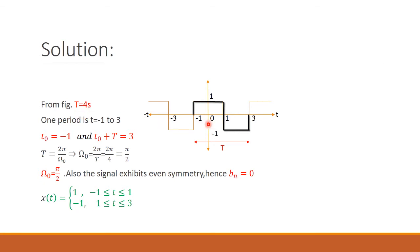From minus 1 to 0, that is 1 second; then 0 to 1, another 1 second; then 1 to 3, that is 2 seconds. So total time period T = 4 seconds. One period is taken as T going from minus 1 to 3 — that is the limit, minus 1 to 3.